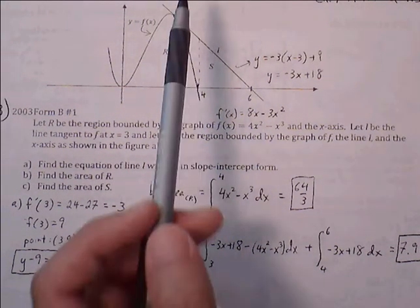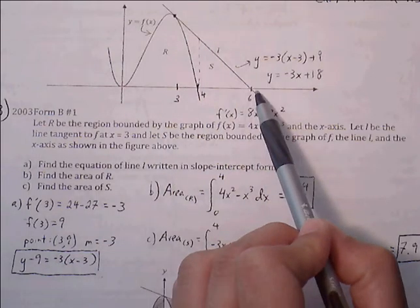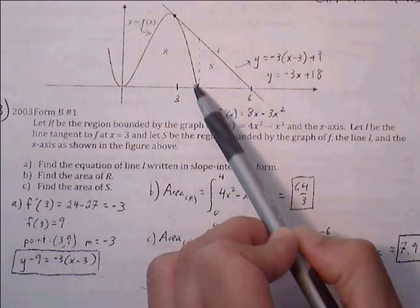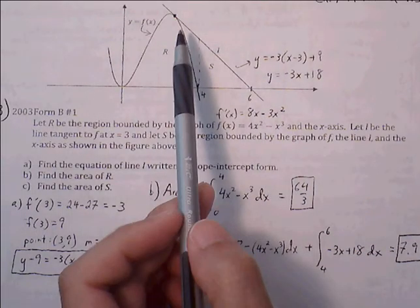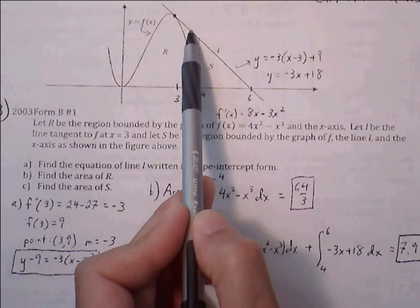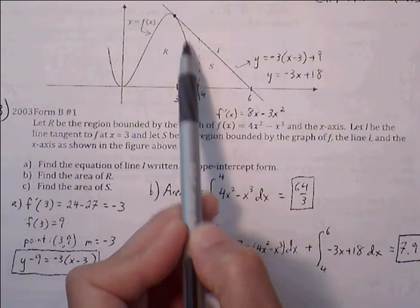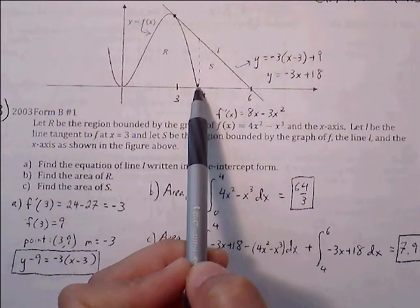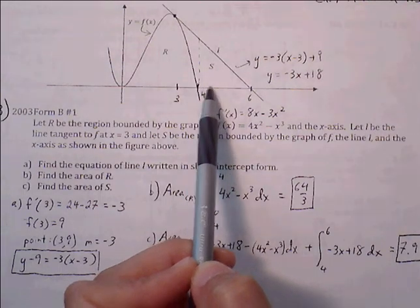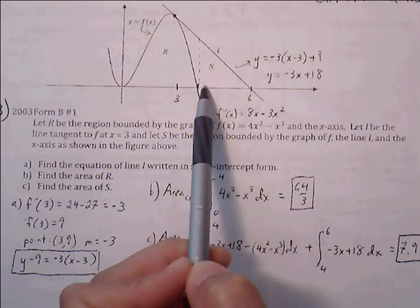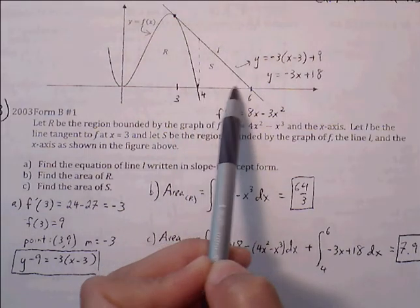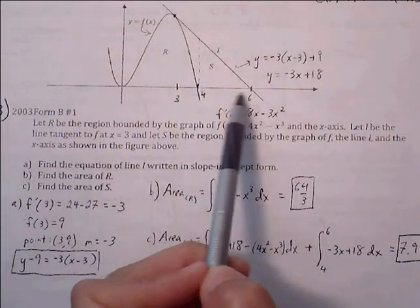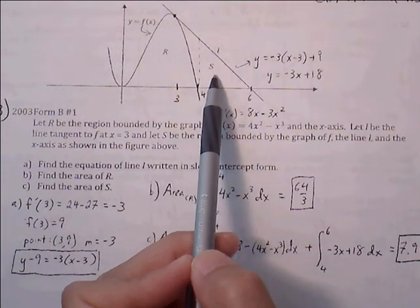Part C: find the area of S. We have to be careful here because when doing top minus bottom for region S, the bottom of the graph is changing. The top is the line and the bottom is the curve — but only until a dotted vertical line, because to the right of that vertical line, the bottom of region S changes from f of x to the x-axis. Since the bottom curve is not consistent throughout region S, we have to split this into two separate area problems.